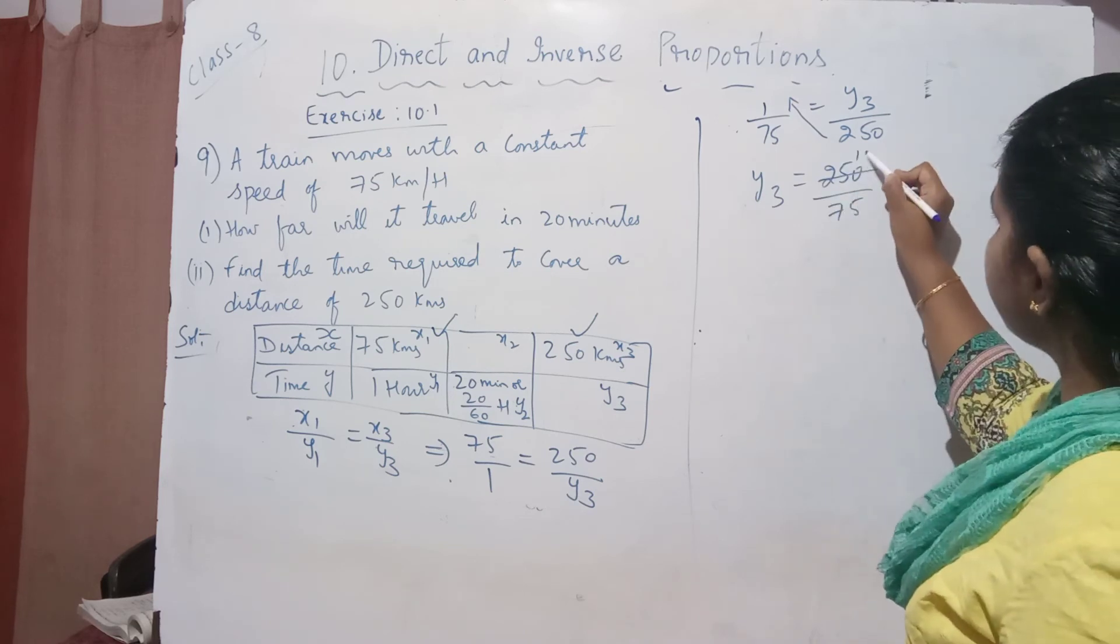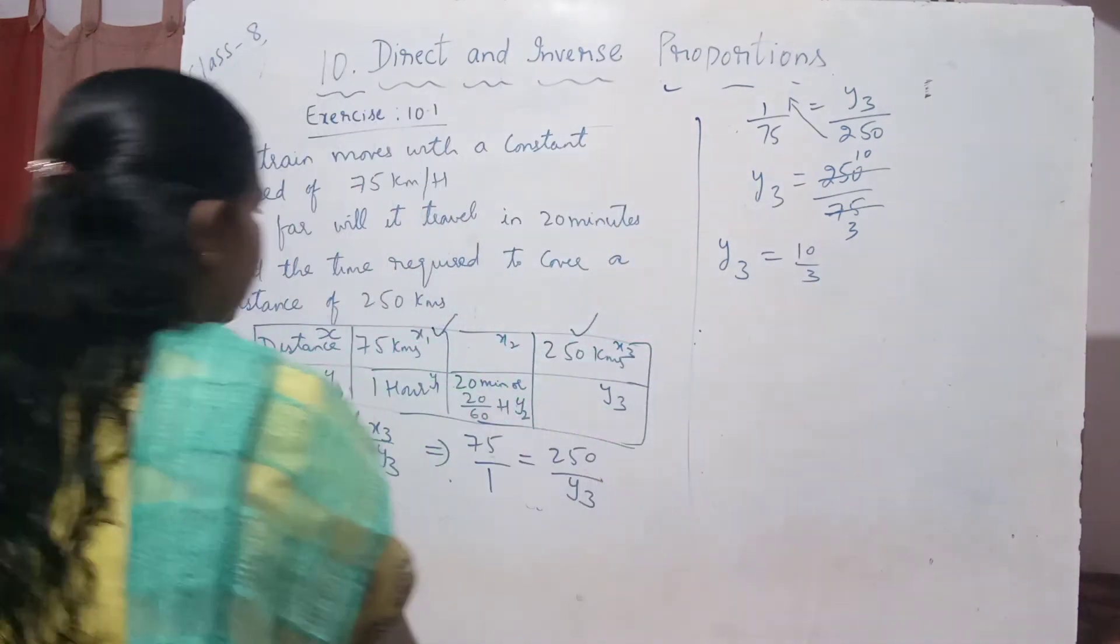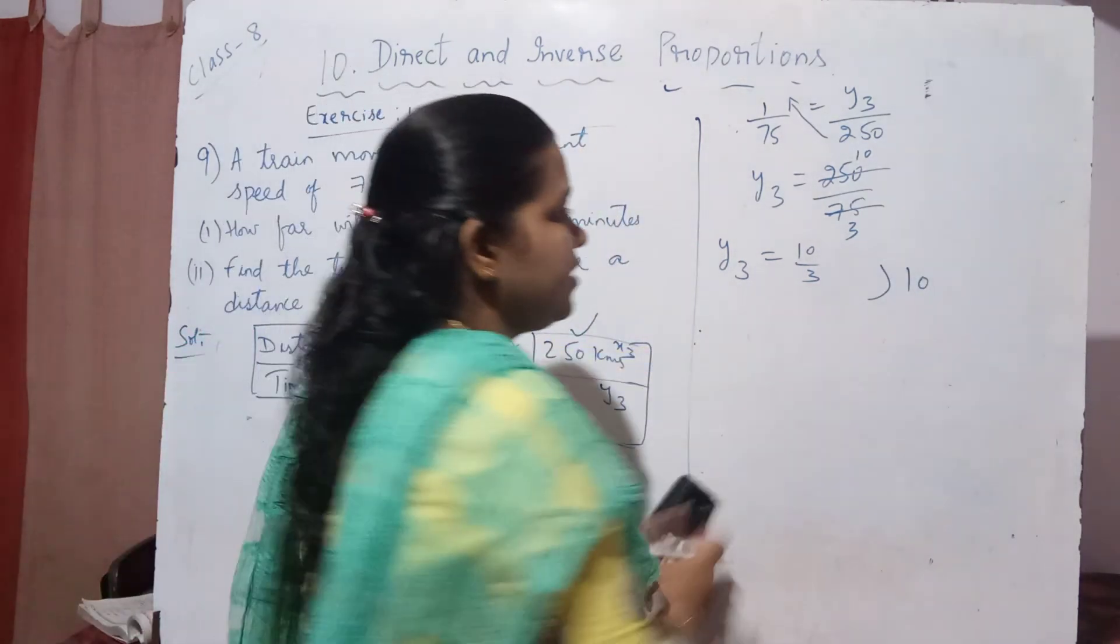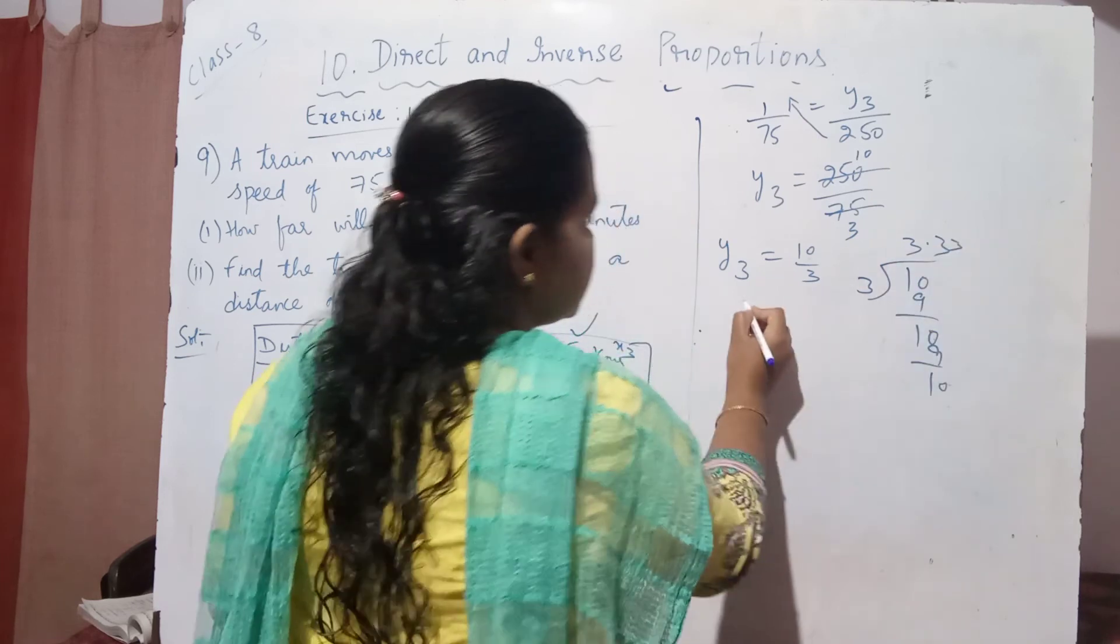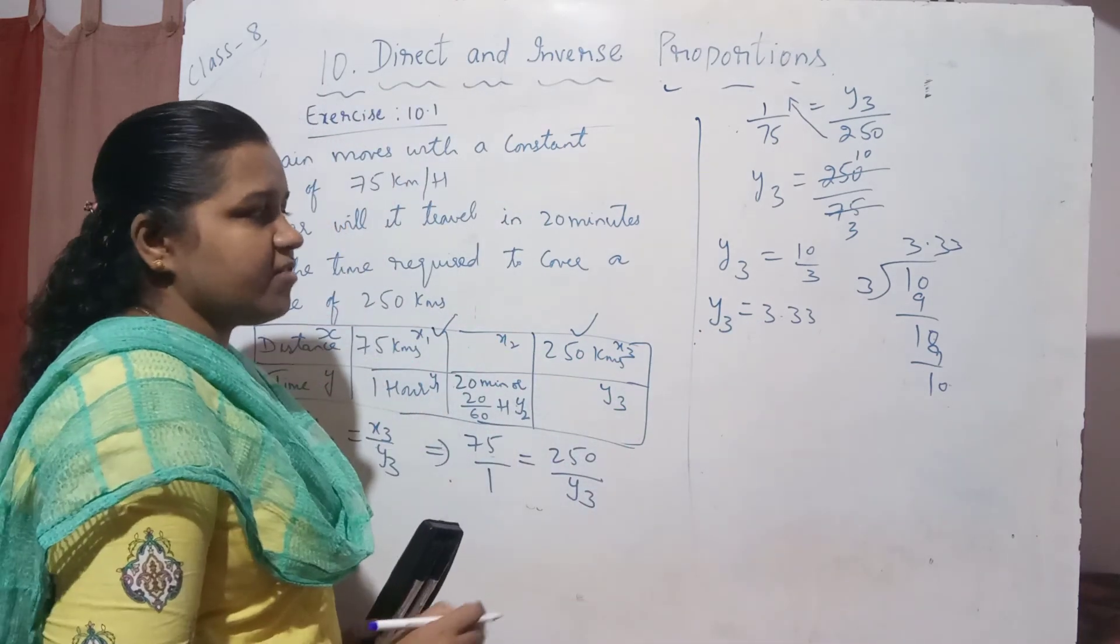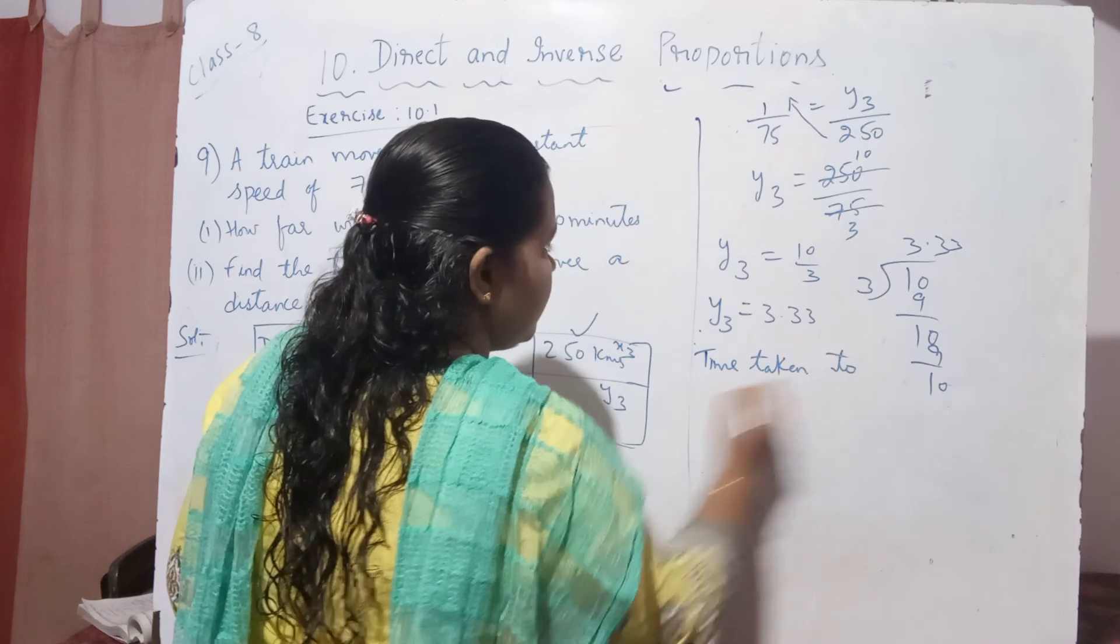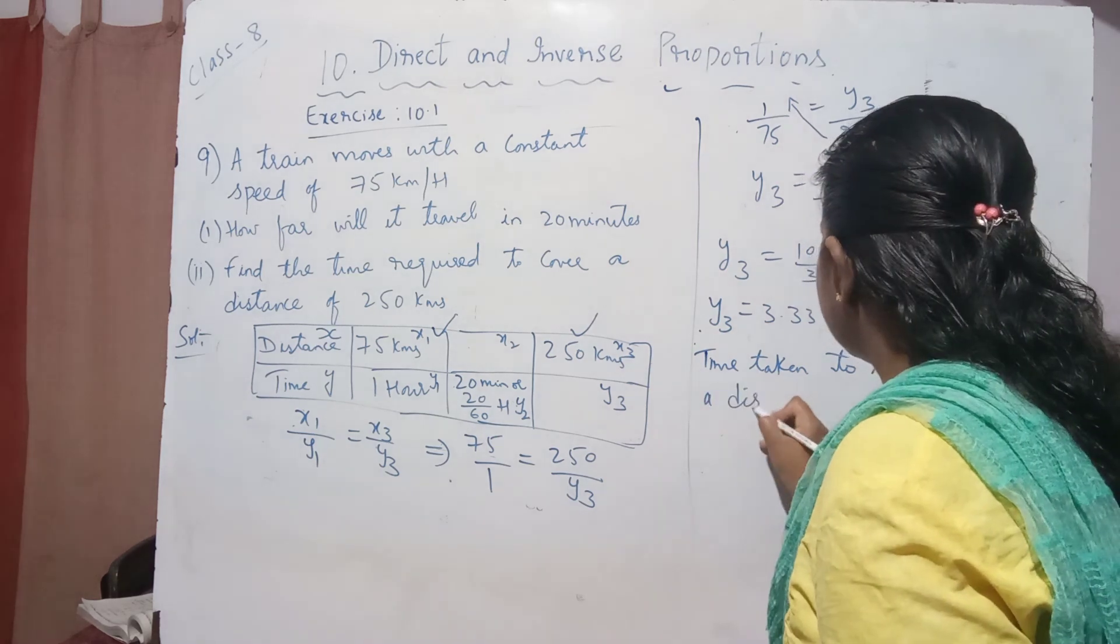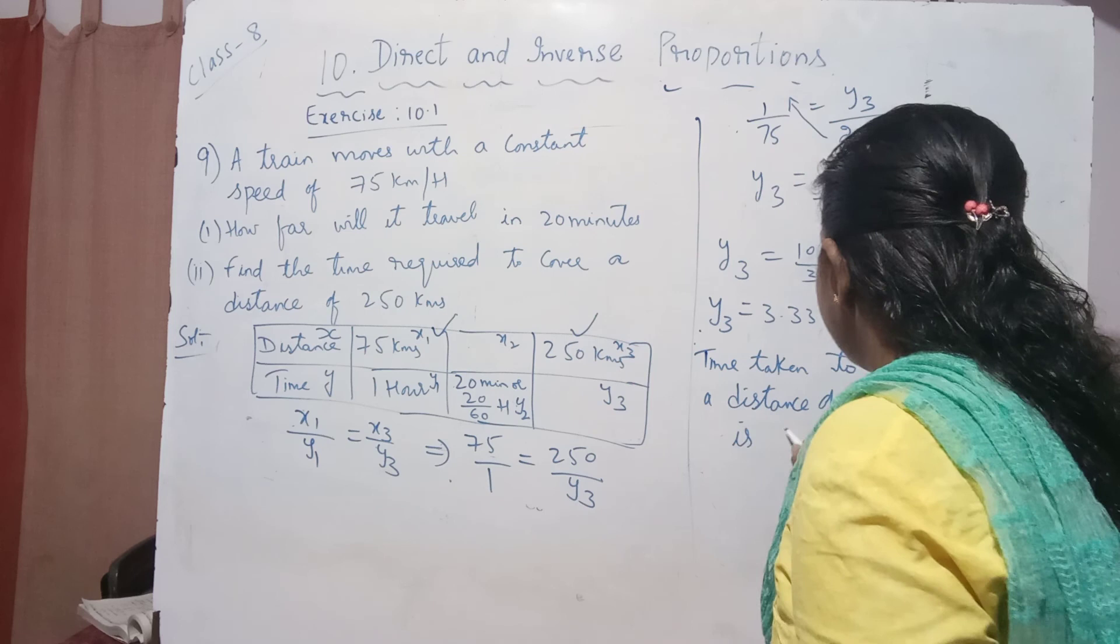So y3 equals 10 by 3. What is y3 here? That is the time taken to cover a distance of 250 kilometers. 10 by 3. If you write in decimal form, 10 by 3: 3, 3s are 9, 1.0. 3, 3s are 9, 1.0. It goes on like this. That is 3.33 and so on. I am stopping at 2 decimals. Roughly you can take 3.33 hours. Time taken to travel a distance of 250 kilometers is 3.33 hours.